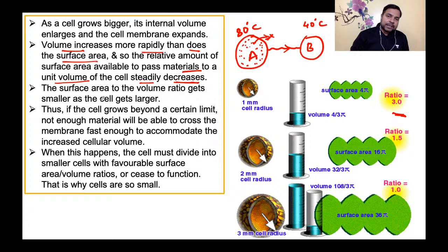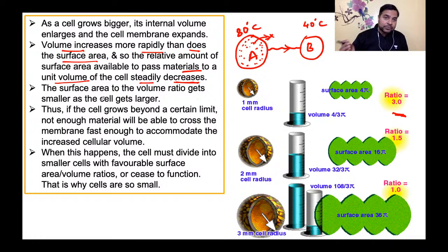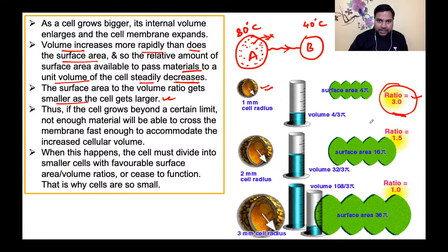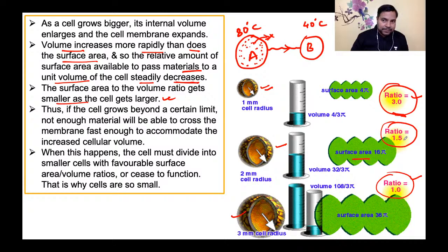Generally एक misconception होती है कि जहाँ body size larger होगा, उसका surface area भी larger होगा — नहीं। In comparison to its volume, surface area कम होता है। एक बच्चे का surface area to volume ratio एक adult के मुकाबले ज़्यादा होगा। So the surface area to volume ratio gets smaller as the cell gets larger — r=1 पर ratio 3, r=2 पर 1.5, r=3 पर 1।